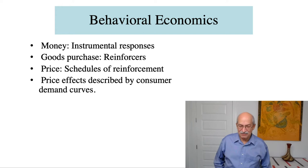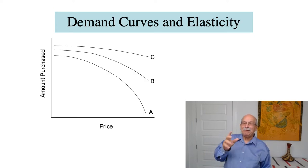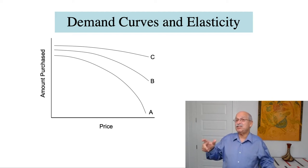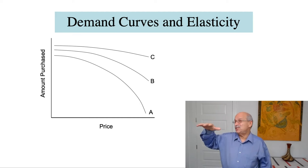And price effects are described by consumer demand curves. And the next slide illustrates some hypothetical examples of consumer demand curves. So in this form of representation, what we're looking at is how much of an item is purchased depending on how much that costs. So increases in price are displayed on the bottom axis and the number of goods, a number of items of that sort that are purchased, are displayed on the y-axis. And you can see that in curve C, as you increase the price, the number of items purchased stays pretty stable.